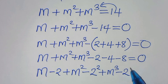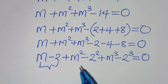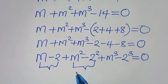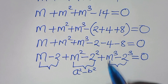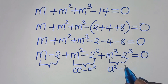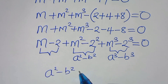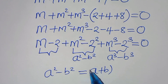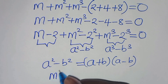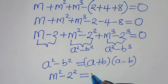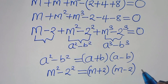We have three parts here. The second part is the difference of two perfect squares: a squared minus b squared equals (a plus b)(a minus b). So m squared minus 2 squared can be expressed as (m plus 2)(m minus 2). Let's call this equation 1.